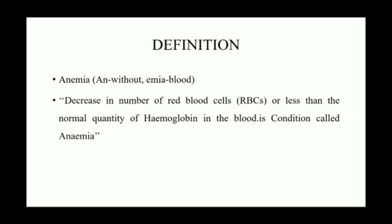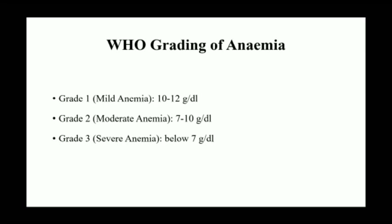RBC ka kam hona normal se — usko anemia kehte hain. WHO ke according grade di gayi hai: jo adult male hota hai uski limit 13 gram per dL se kam hoti hai to wo anemic ho jata hai. Female mein 11.5 gram per dL se kam ho to anemic patient mana jata hai. Pregnant lady mein 11 gram per dL aur newborn mein 15 gram per dL.